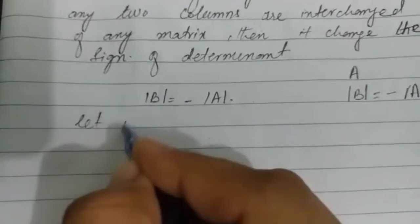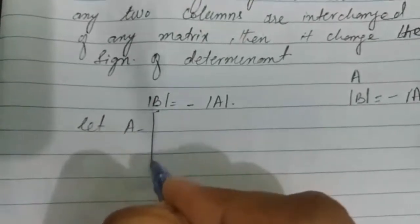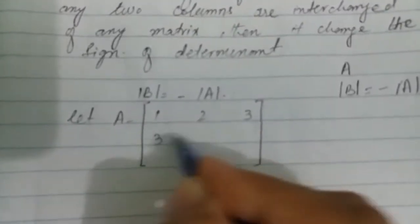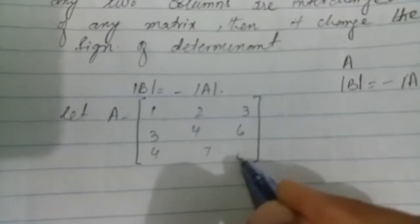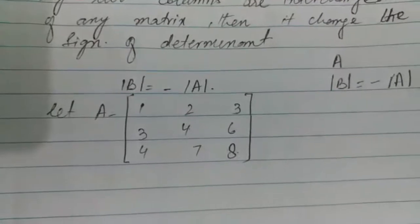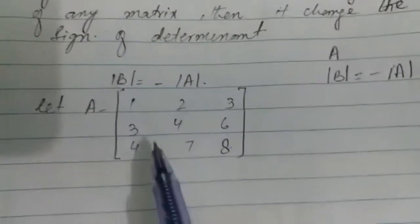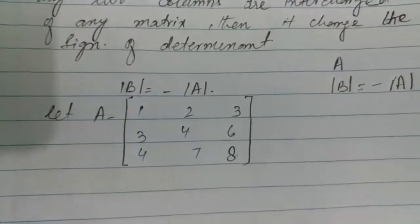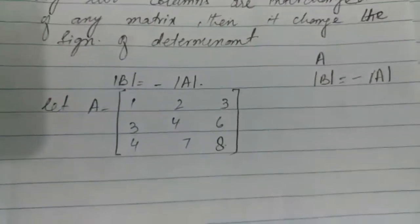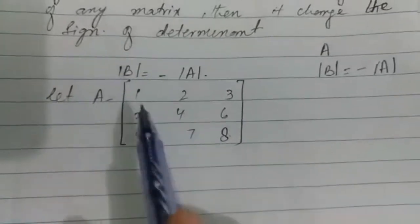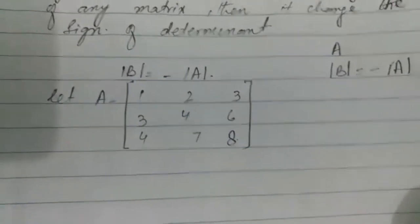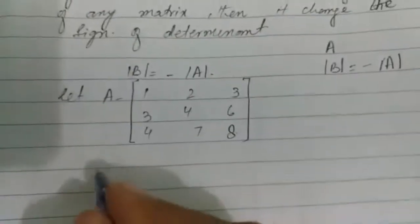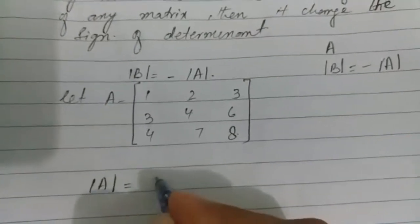Let we have matrix A: [1, 2, 3; 3, 4, 6; 4, 7, 8]. We have to verify that determinant of B equals negative determinant of A. I have used this matrix in my previous lecture, so I am not going to find the determinant of A again — I will share the link in the description box. The determinant of A from the previous lecture is 5.